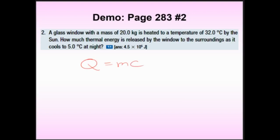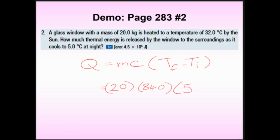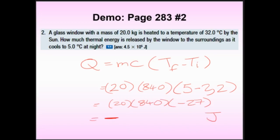Should I use the delta T form or the Tf − Ti form? I actually know both temperatures, so I'll use the bracket form. Mass is 20 kg. The specific heat capacity of glass from the chart is 840 J/(kg·°C). Final temperature is 5°C, initial is 32°C. So we compute: 20 × 840 × (5 − 32) = 20 × 840 × (−27).